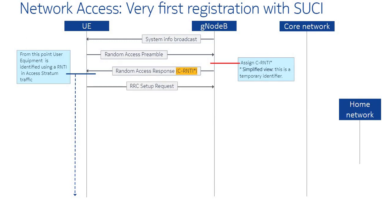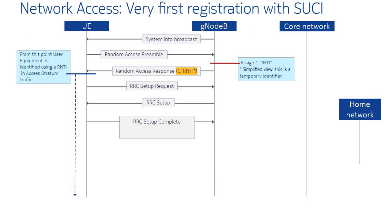The RRC setup establishes a non-protected signaling bearer to the UE to relay non-access stratum signaling between the UE and the core network.